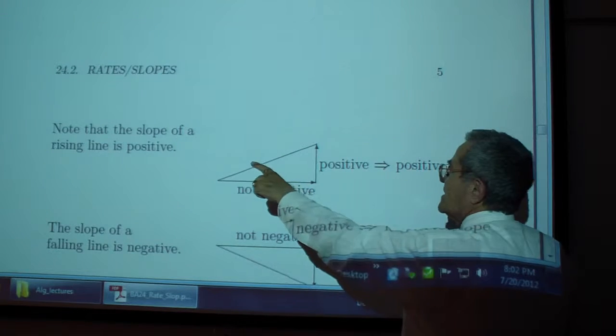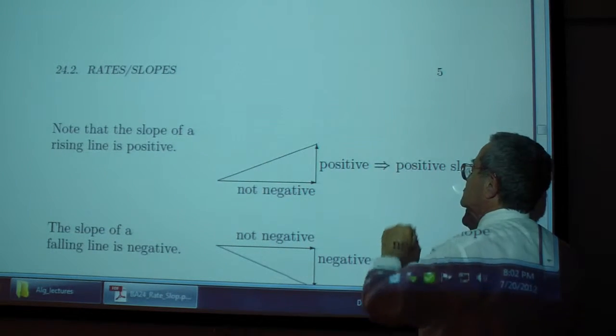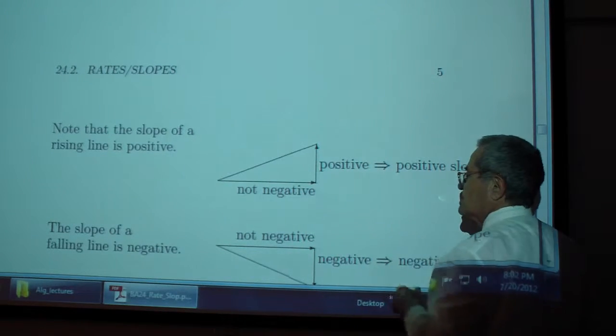Note that the slope of a rising line, this is a rising line, is positive because we divide a positive number by a positive number.